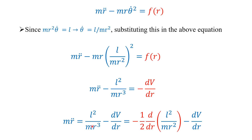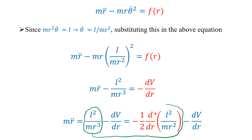So m R-double-dot equals l-squared over (m R cubed) minus dV/dR. The first term can be written as minus d/dR of (l-squared divided by 2m R-squared), since differentiating 1/R-squared with respect to R gives minus 2/R-cubed, and the factors combine correctly to reproduce the l-squared over m R-cubed term.